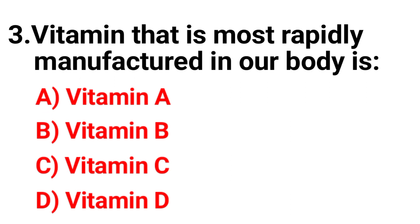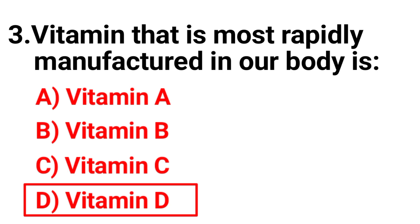Question 3: The vitamin that is most readily manufactured in our body is — option A: vitamin A, B: vitamin B, C: vitamin C, D: vitamin D. The correct answer is option D — vitamin D.